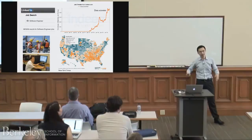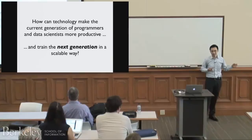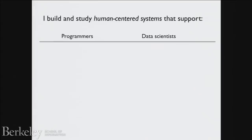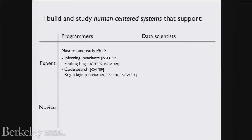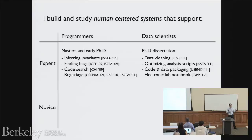Given the importance of programming and data science, the high-level question driving my overall research agenda is: how can technology make the current generation of programmers and data scientists more productive, and how do you train the next generation in a scalable way? I've spent the past decade building and studying human-centered systems for two main audiences — programmers and data scientists — and I further break this down into experts and novices.